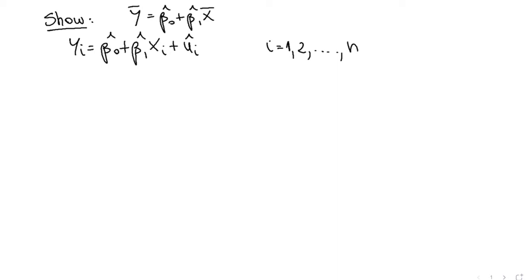So we could just write these equations. This is for person 1, and it's just beta naught hat plus beta 1 hat x1 plus u1 hat.